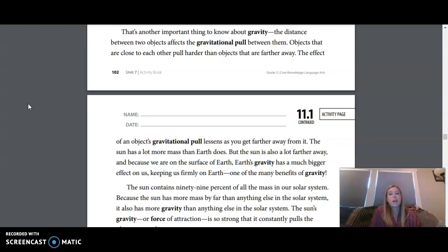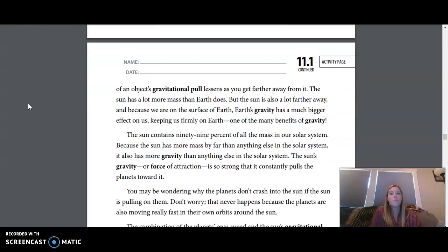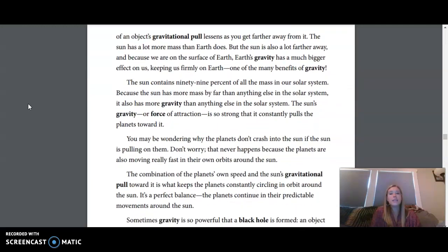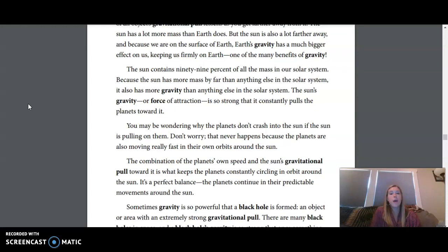That's another important thing to know about gravity. The distance between two objects affects the gravitational pull between them. Objects that are close together, or close to each other, pull harder than objects that are farther away. The effect of an object's gravitational pull lessens as you get farther away from it. The Sun has a lot more mass than Earth does, but the Sun is a lot farther away. And because we're on the surface of Earth, Earth's gravity has a much bigger effect on us.